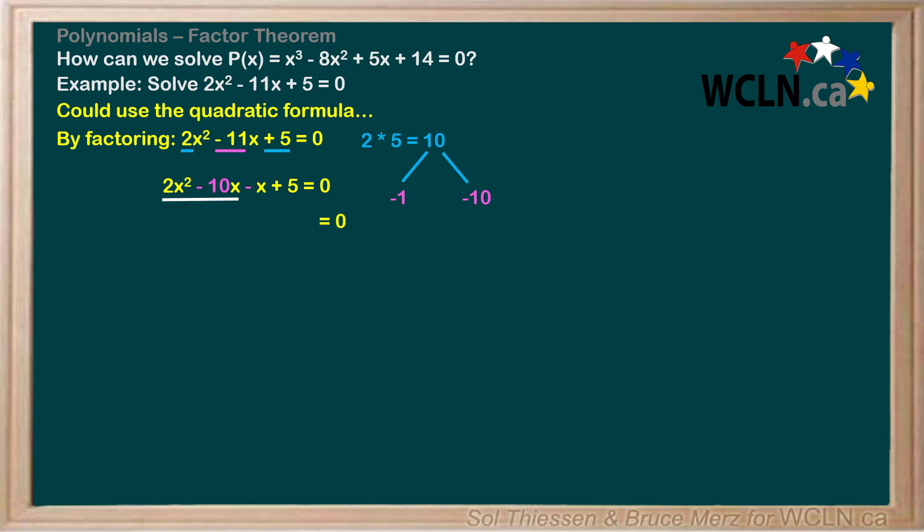Now from the pair of terms on the left, we pull out the greatest common factor, which is 2x, since both coefficients are even and both have an x. This gives us 2x(x - 5). From the pair of terms on the right, we pull out the common factor of -1, which leaves us with -1(x - 5).